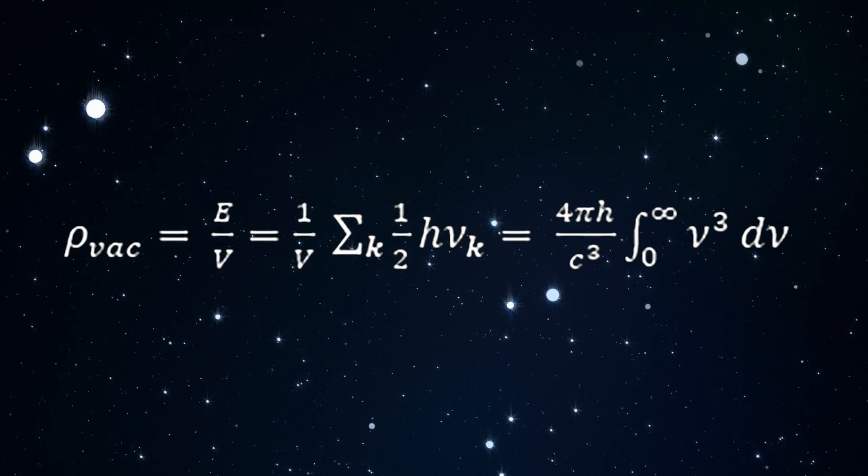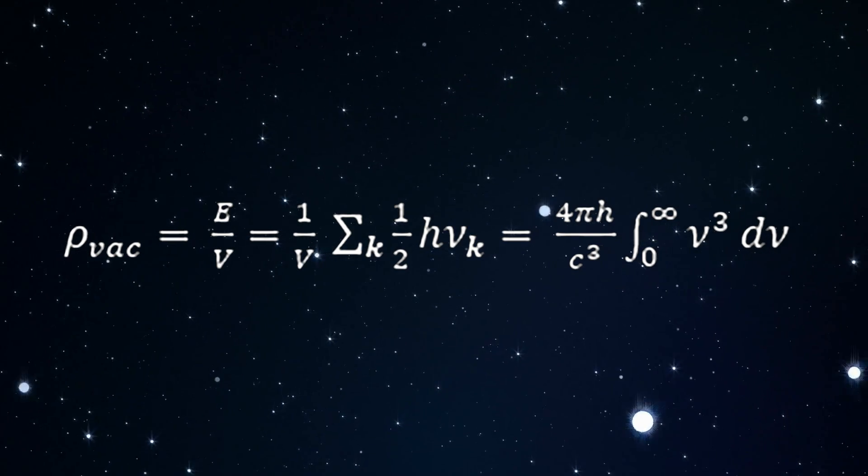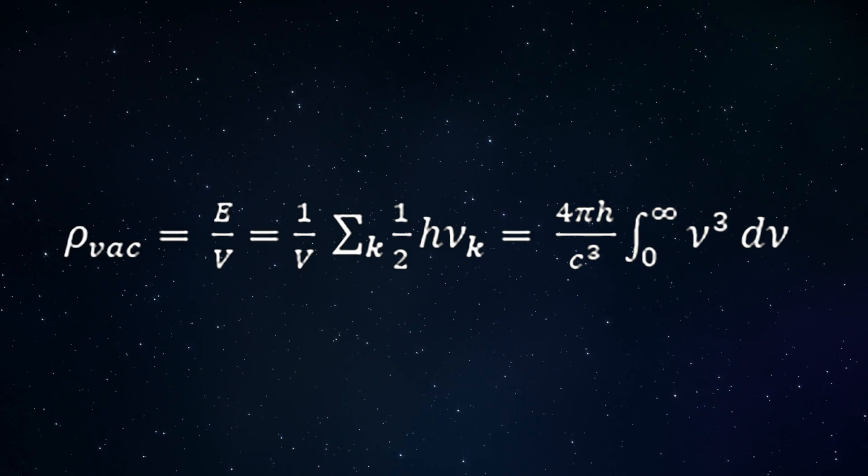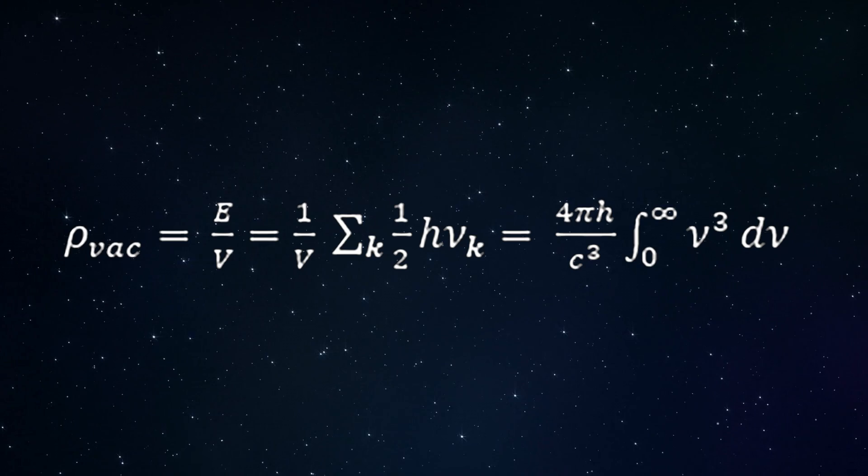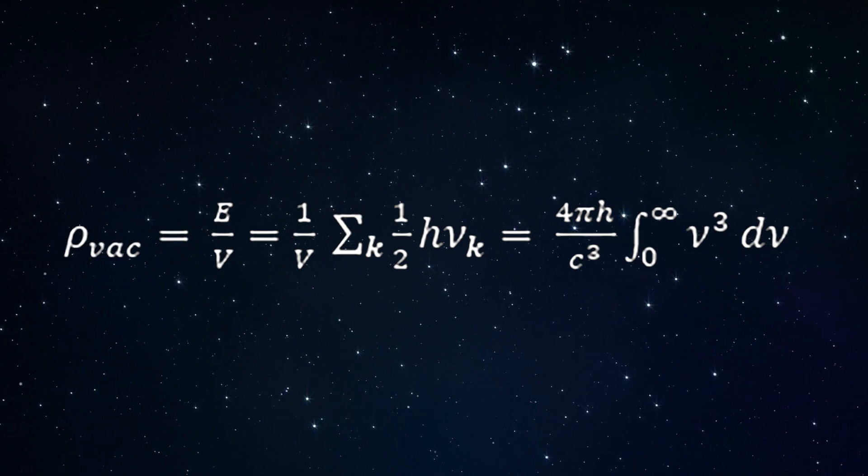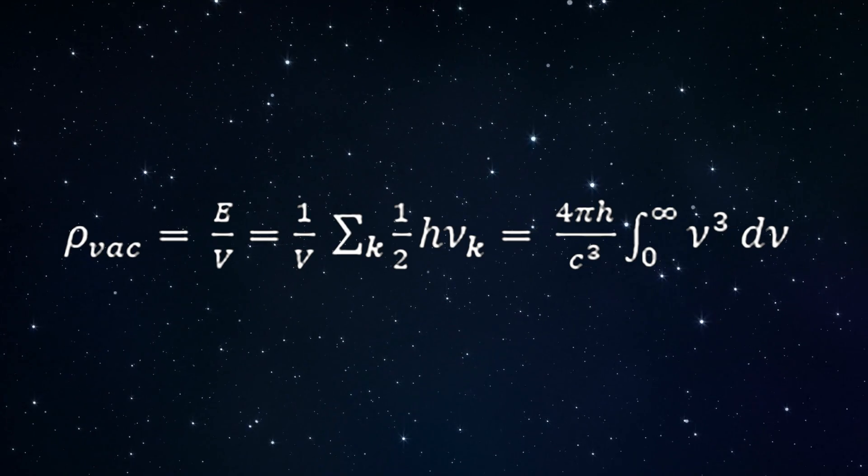The wave vector k signifies the normal modes of the electromagnetic field that are consistent with the boundary conditions on the quantization volume v. As v approaches infinity, one obtains the right-hand side of the equation.